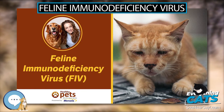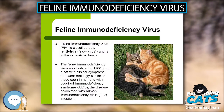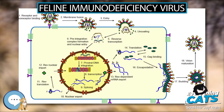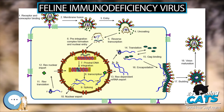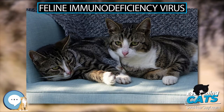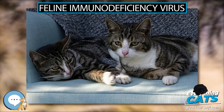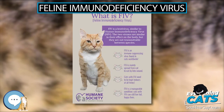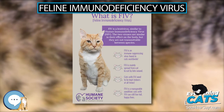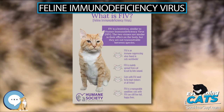Cats will test positive for FIV antibodies after vaccination. FIV was first isolated in 1986 by Neal Pedersen at the UC Davis School of Veterinary Medicine in a colony of cats that had a high prevalence of opportunistic infections and degenerative conditions, and was originally called feline T-lymphotropic virus. It has since been identified in domestic cats worldwide.